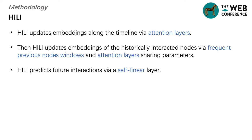HELI updates embeddings along the timeline via attention layers. HELI updates embeddings of historical interactive nodes via frequent previous nodes windows and attention layers sharing parameters. We use a symmetric HELI update structure with attention layers instead of RNN because it maintains symmetry when passing information to historical interactive nodes. We use the attention layer sharing parameters to update the embeddings of the current and historical interactive nodes in order to maintain symmetry of information passing.